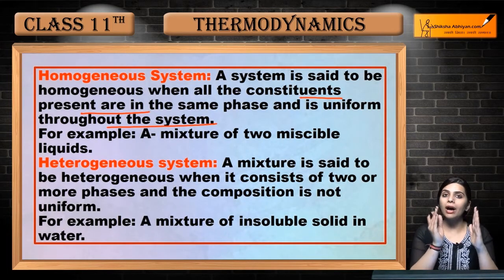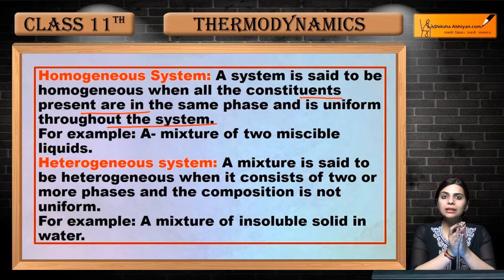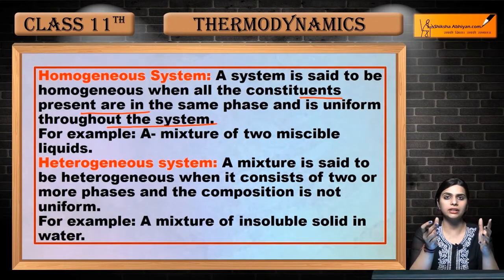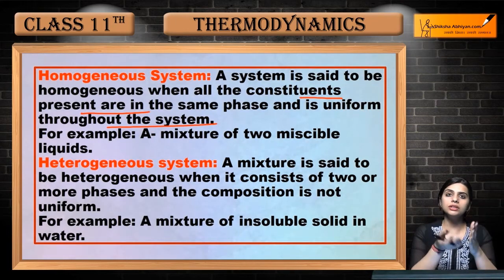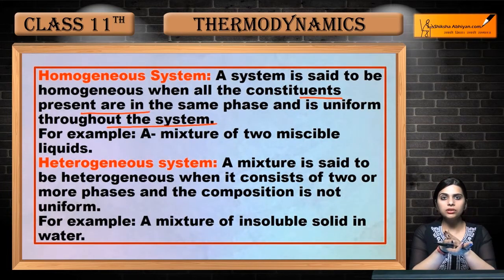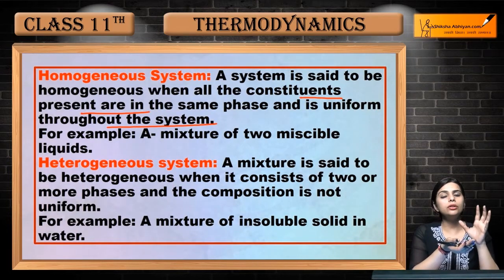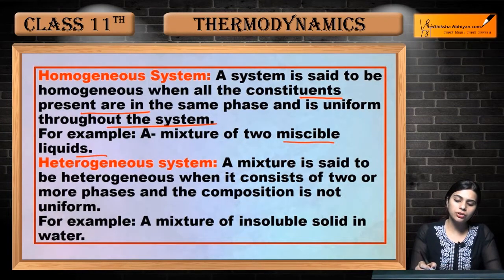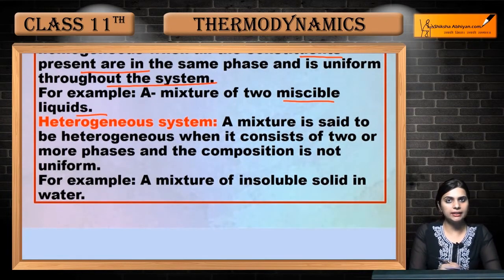Toh aapko jo mixture milta hai woh homogenous milta hai — matlab ek hi state ka milta hai. Aisa nahi hai ke aap dono ko phir differentiate kar sako ya bifurcate kar sako. So jo system aise hote hain, in which no separation is possible, no bifurcation is possible, and which are present in a uniform composition — those are known as a homogenous system. A mixture of two miscible liquids is our example.